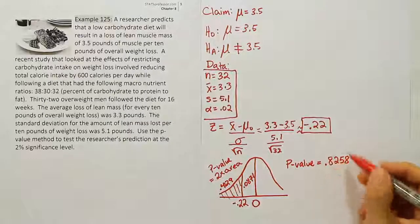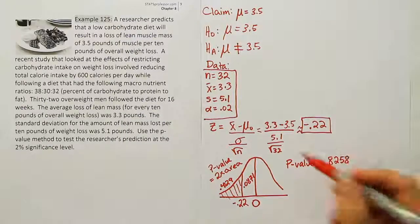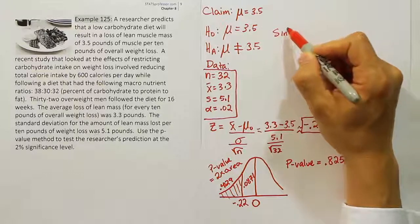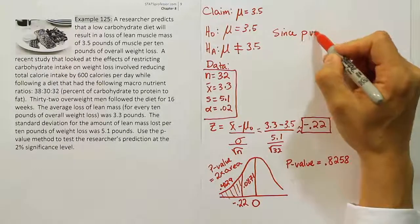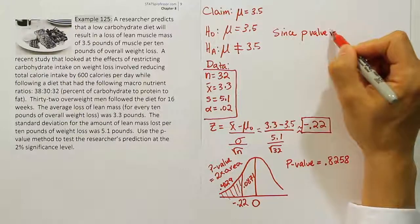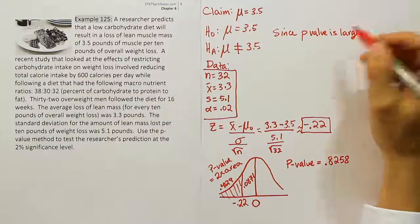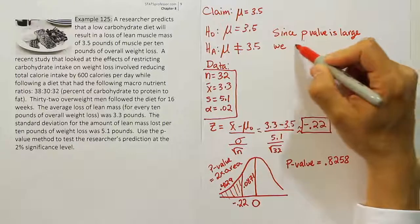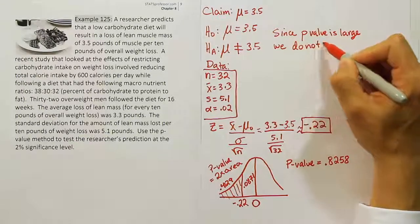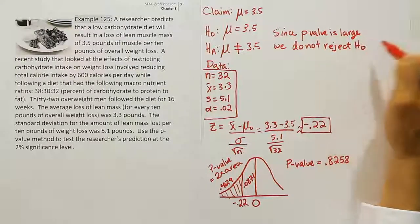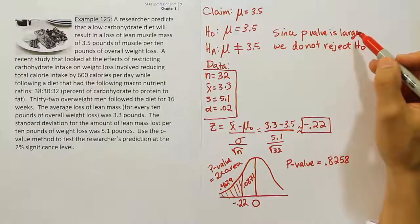From there, we're going to take that p-value and compare it against alpha to see what our decision is. Since the p-value is large, we do not reject the null.